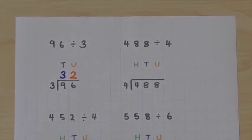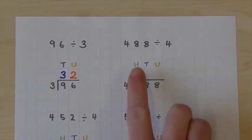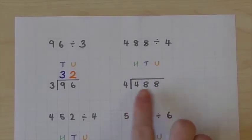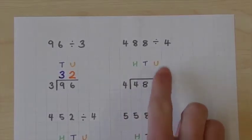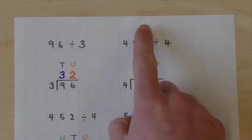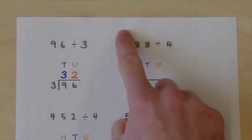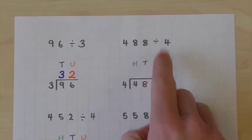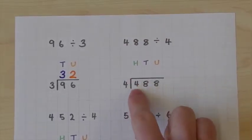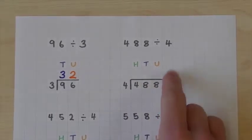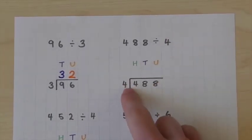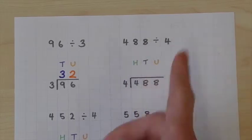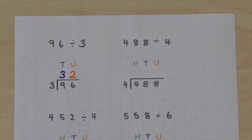Moving on to the second example, the only difference here is that this is a 3-digit number. Once again, we must remember that our dividend goes inside our division bar and our divisor goes outside, so we are swapping our numbers around.